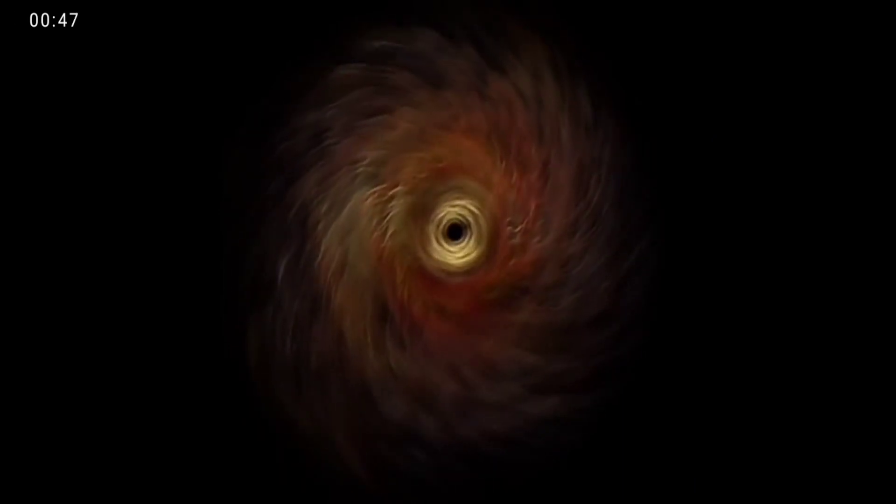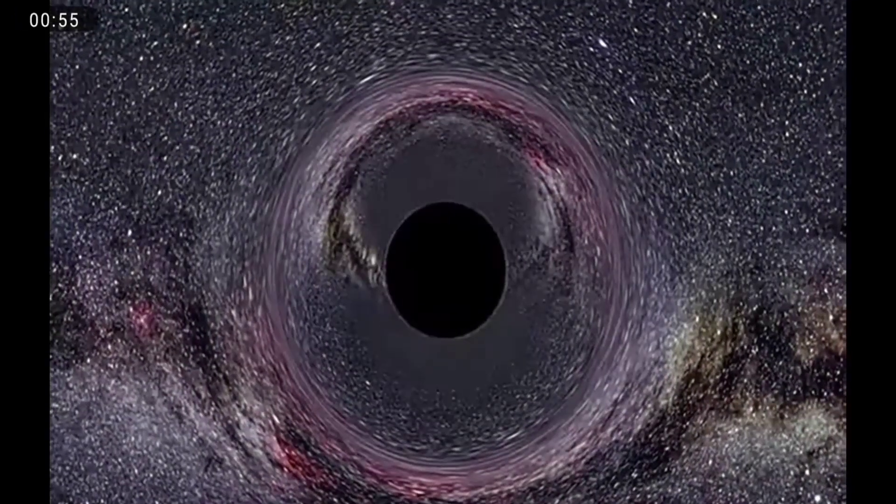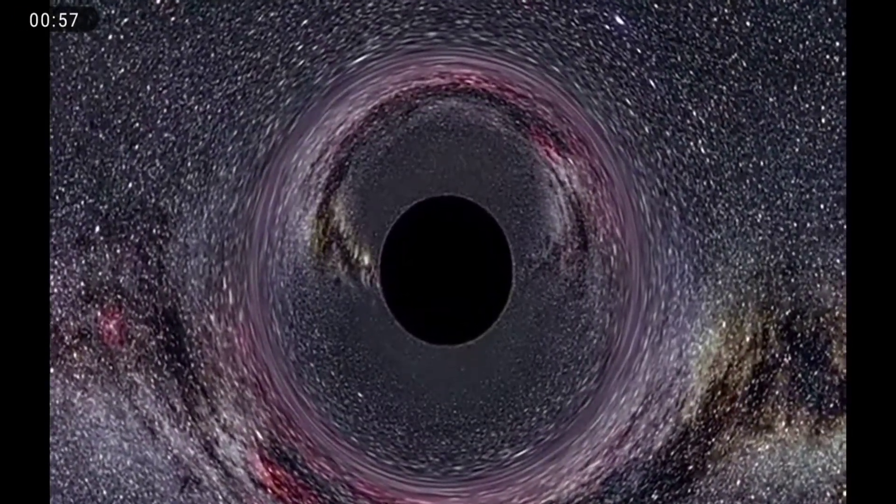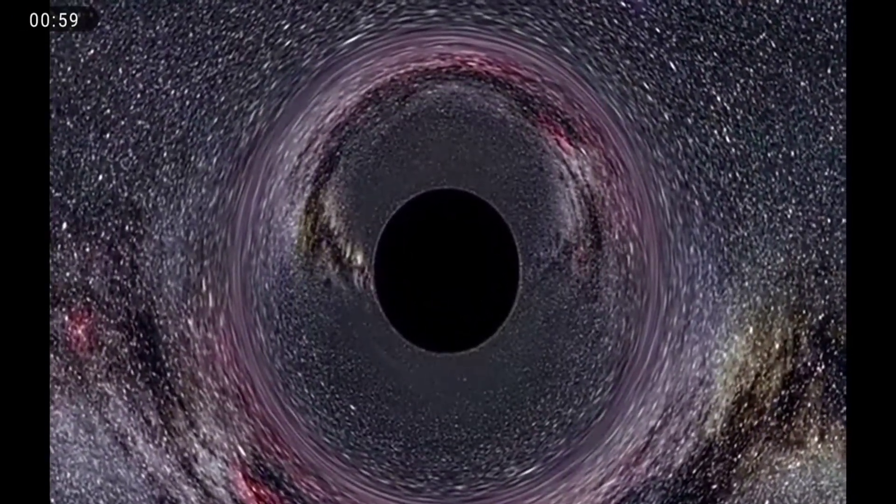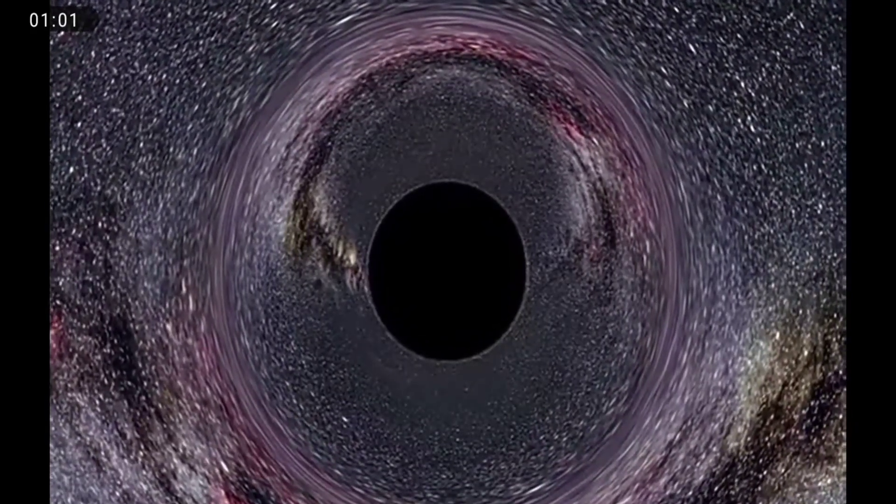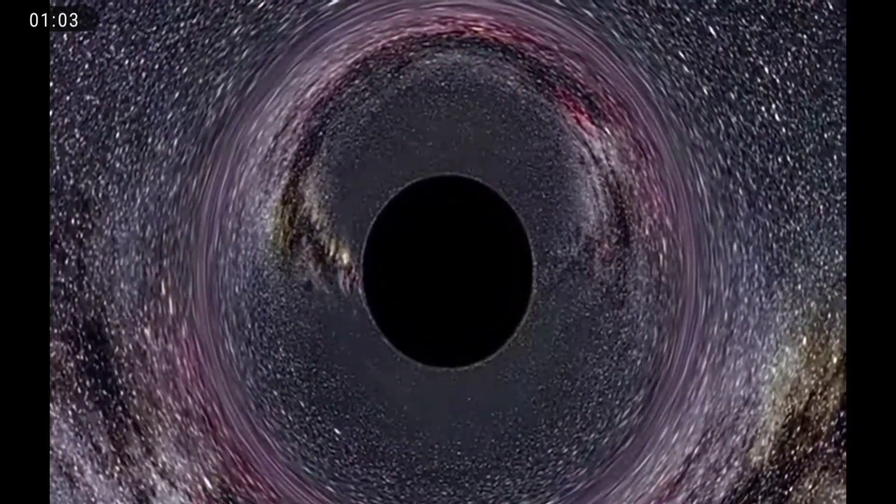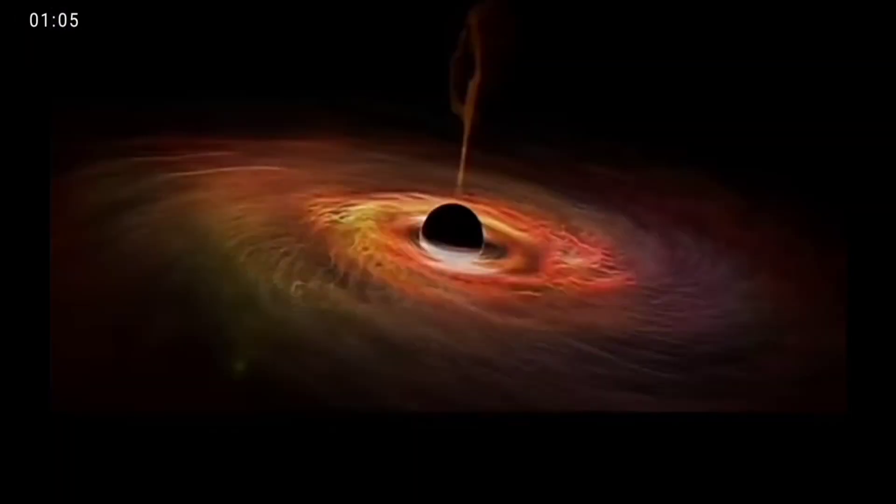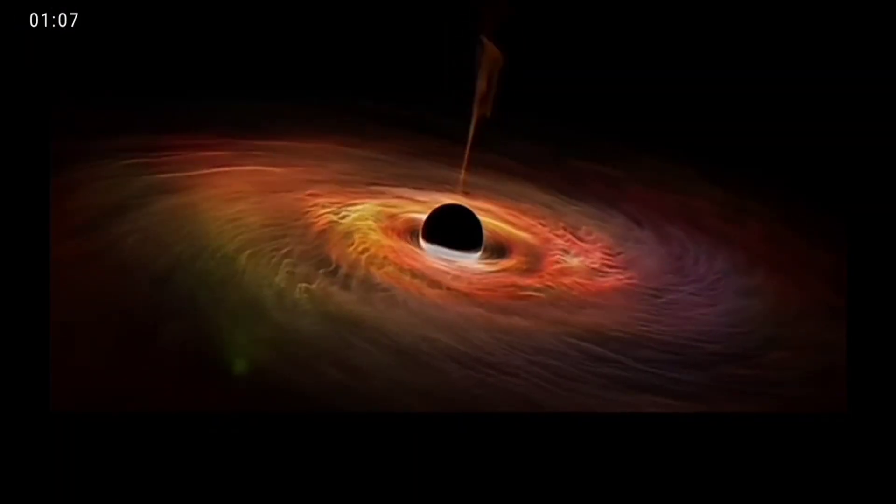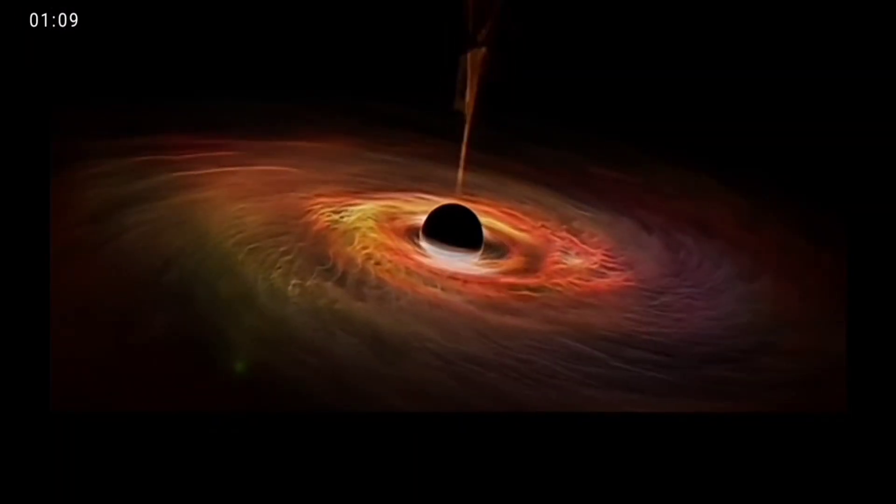Black holes of stellar mass are expected to form when very massive stars collapse at the end of their life cycle. After a black hole has formed, it can continue to grow by absorbing mass from its surroundings. By absorbing other stars and merging with other black holes, supermassive black holes of millions of solar masses may form. There is consensus that supermassive black holes exist in the centers of most galaxies.